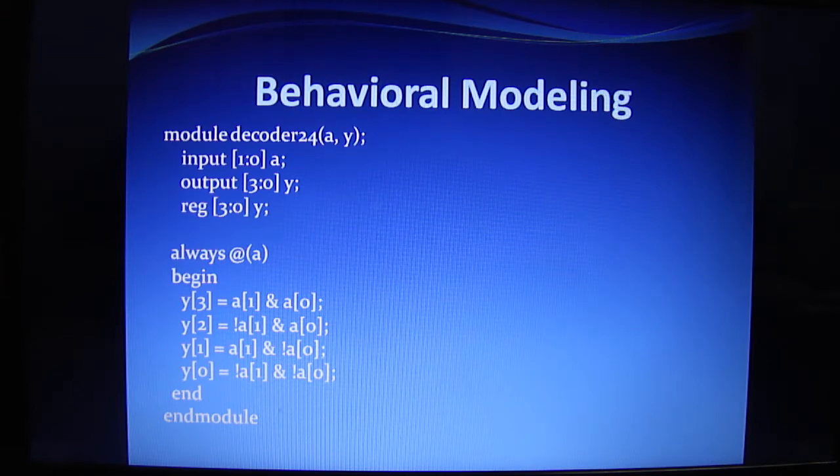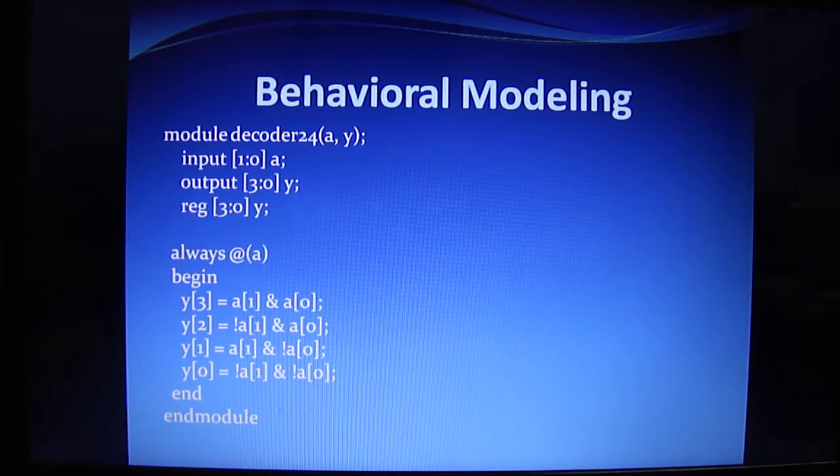[1:0] means we are defining this variable a as a vector quantity, and we are using two variables like a[0] and a[1]. Also, the output variable we are defining as [3:0].